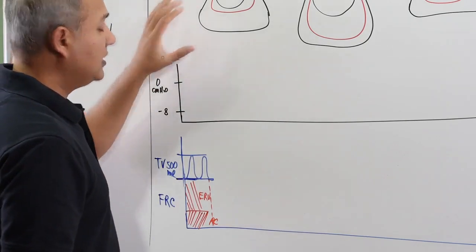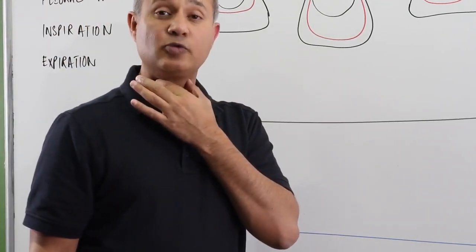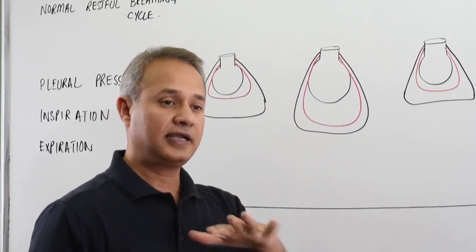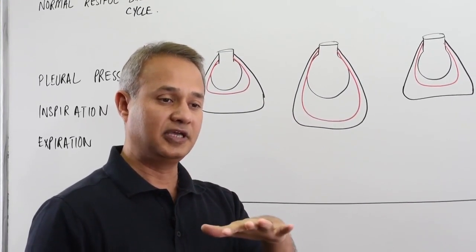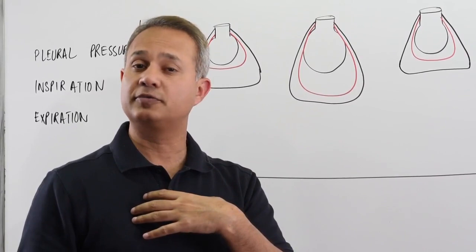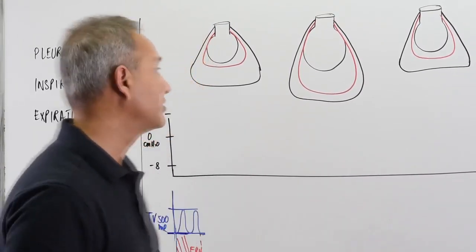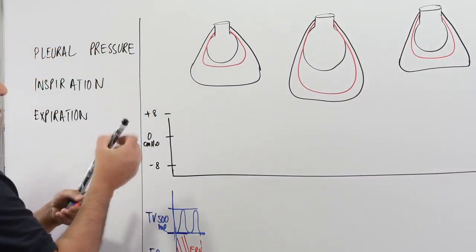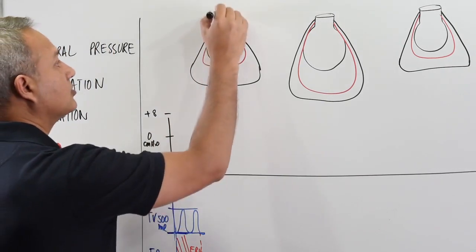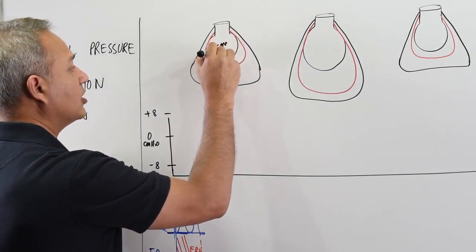Now if I open my glottis — meaning my airway is open to the environment — and I stop breathing, the alveolar pressure in my alveoli will be zero centimeters of water.